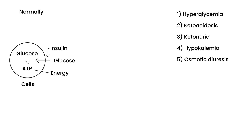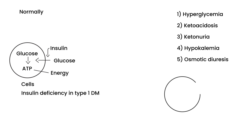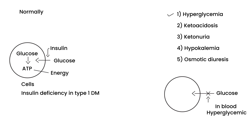What happens in insulin deficiency, which is a consequence of having type 1 diabetes, is that the cell all of a sudden can't take glucose in. If the glucose can't go inside the cell, it then accumulates in the blood. Increased levels of glucose in the blood are known as hyperglycemia. That's the first of the five things.